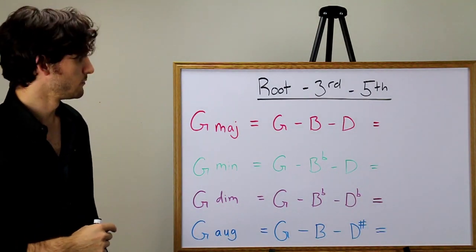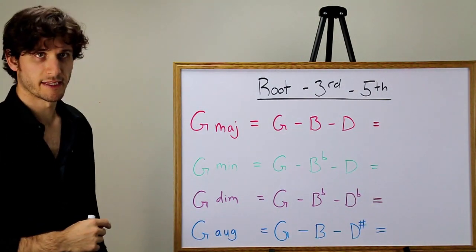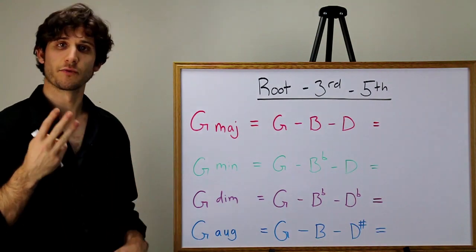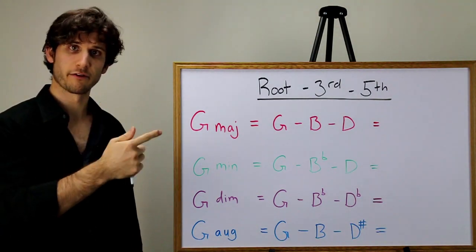With the root third fifth model, we can look at triads a little bit differently. Every triad has three notes: a root, a third, and a fifth.